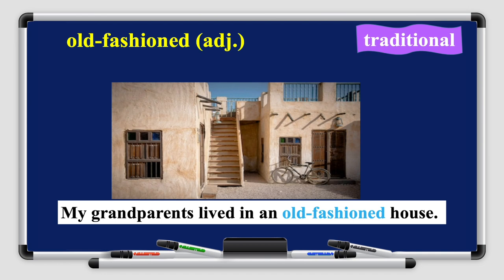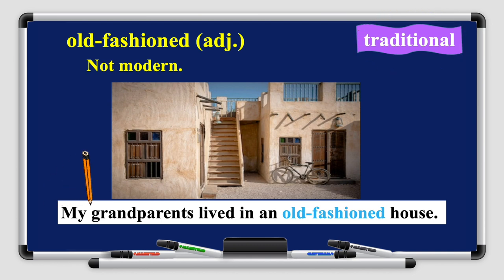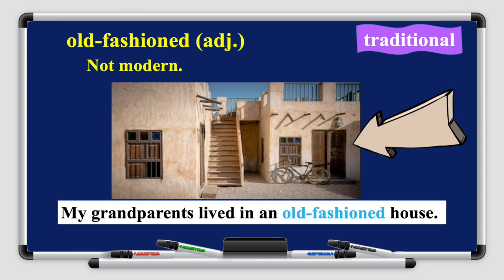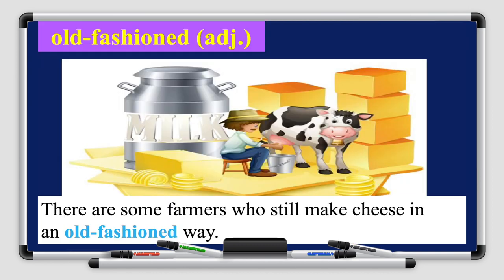The next word is 'old-fashioned' — it's an adjective. It means not modern. Its synonym is 'traditional' — traditional and old-fashioned are synonyms. Let's read the sentence: my grandparents lived in an old-fashioned house. In this picture you can see an old-fashioned Kuwaiti house — people in Kuwait used to live in houses like this, with small windows and a small staircase. There are also some farmers who still make cheese in an old-fashioned way — a farmer milking a cow and transforming the milk into cheese, whereas nowadays factories use machines.